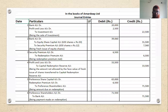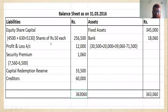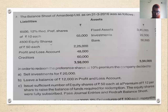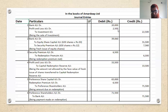These are the six journal entries. First, investment is sold for ₹20,000, so the entry is: Bank account Dr. ₹20,000 and Profit & Loss account Dr. ₹2,500 — to Investment account ₹22,500. That ₹2,500 difference is the loss on sale of investment.